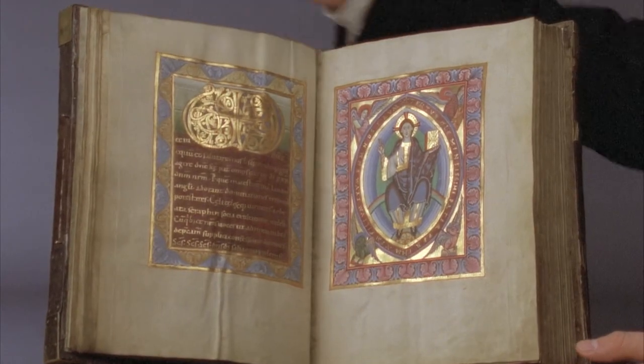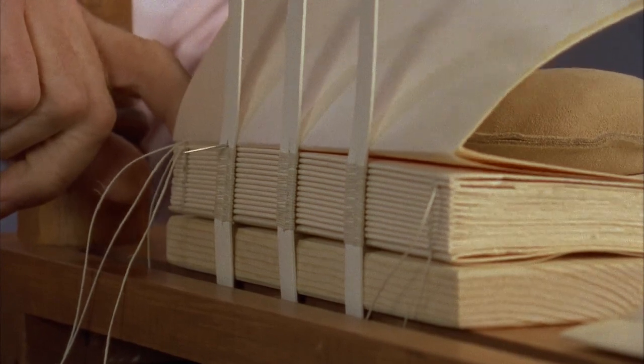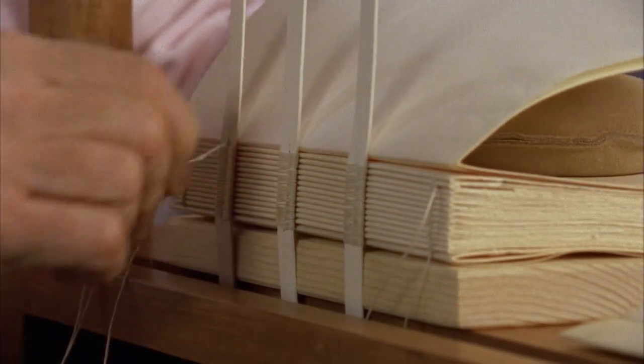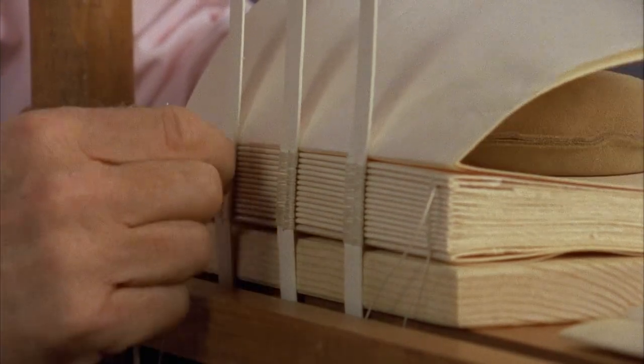The manuscript was bound. Groups of folded sheets of parchment, called gatherings, were sewn together with strong linen thread onto flexible supports, such as these narrow leather thongs.